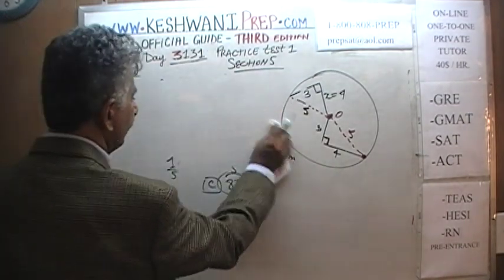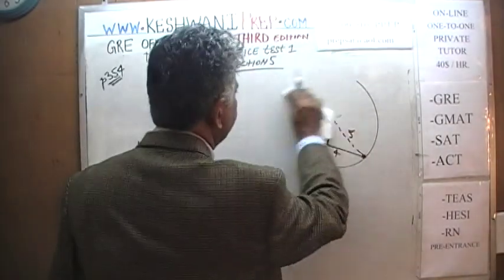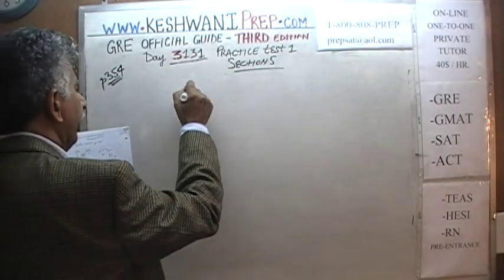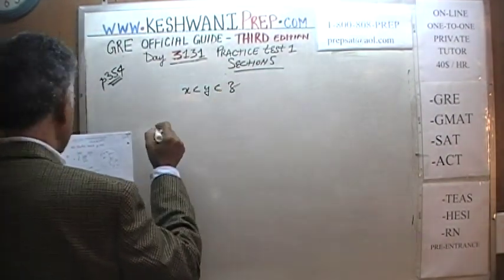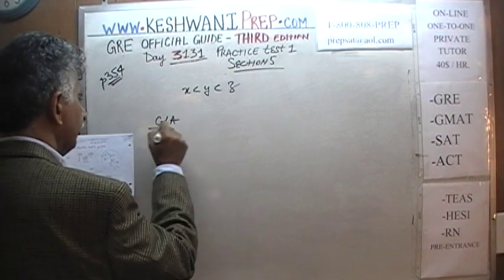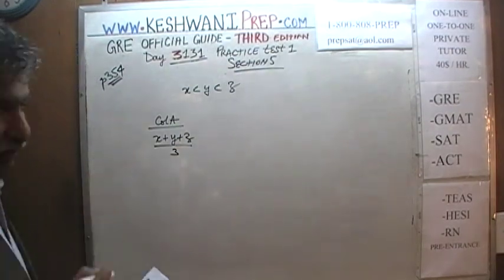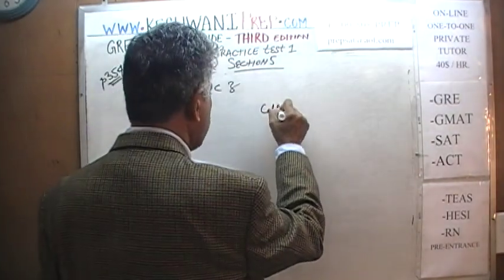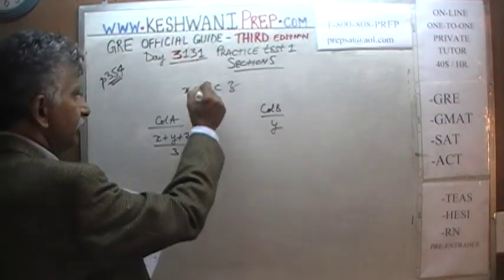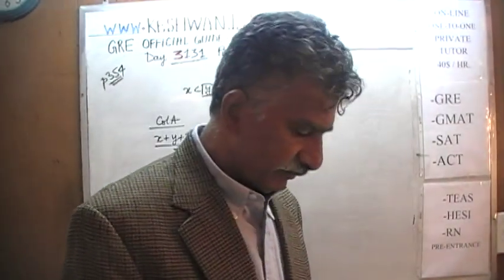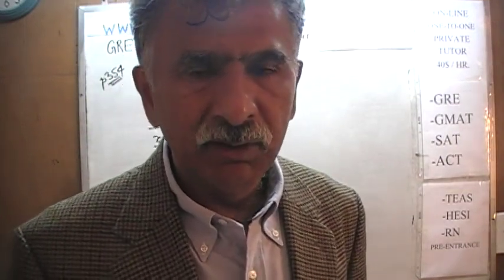Let's look at problem number 3. We are told that X is less than Y, which in turn is less than Z. In column A we have (X + Y + Z) / 3 — in other words, the average of the three quantities. In column B we have Y, which is the median, because it's right in the middle. We don't know their values, but the easiest and most economical approach is to simply plug in numbers instead of trying to analyze it theoretically.